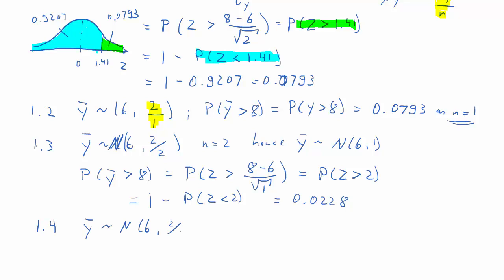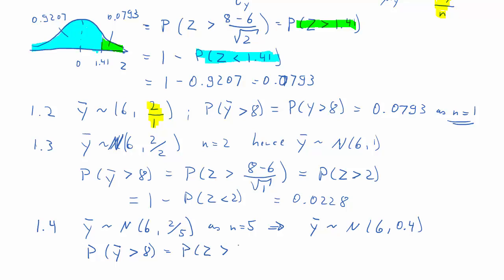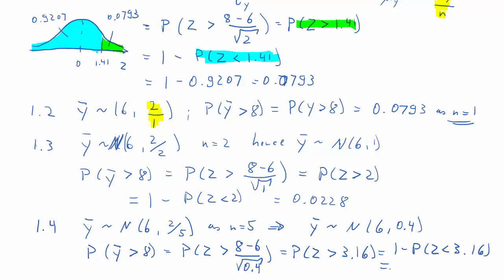Now we have a sample size of 5, which is reflected in the variance of ȳ. So ȳ is normally distributed with mean 6 and variance 0.4. The probability that ȳ is larger than 8 is the same as the probability that Z is larger than (8 − 6) divided by the square root of 0.4. Calculating that gives 3.16, which equals 1 minus the probability that Z is smaller than 3.16 — that's approximately 1, so the probability is essentially 0.